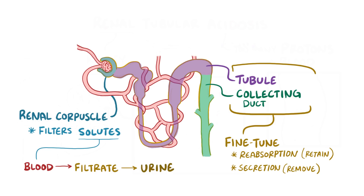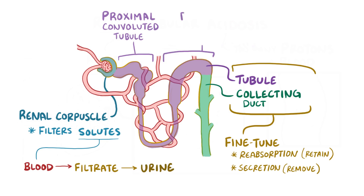Broadly speaking, renal tubular acidosis can develop in either the proximal convoluted tubule, sometimes just called the proximal tubule, or the distal convoluted tubule, or just distal tubule, as well as the nearby collecting duct.